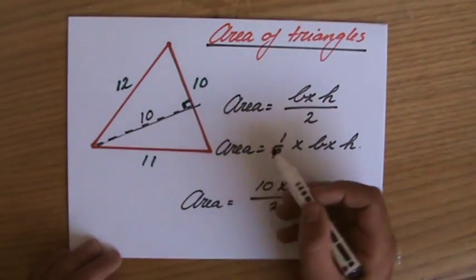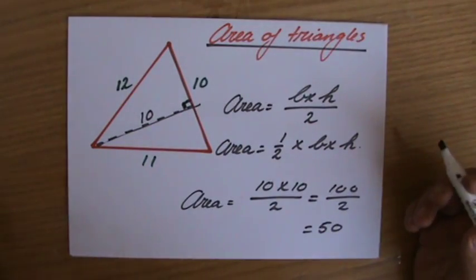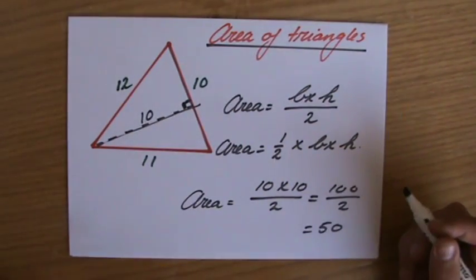So this 12, not 11, I'm not interested in. Because I don't need it to calculate the area anyway.